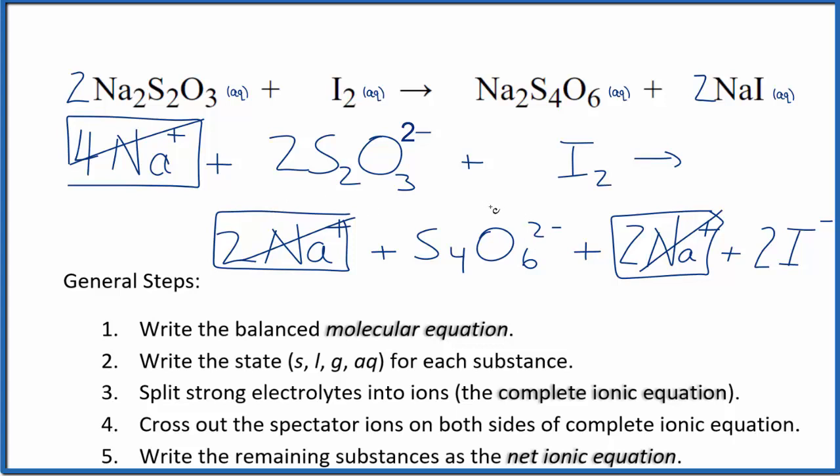But everything else is unique. So this is the net ionic equation for the sodium thiosulfate plus the iodine, I2. I'll clean it up, write the states. We'll have our net ionic equation.